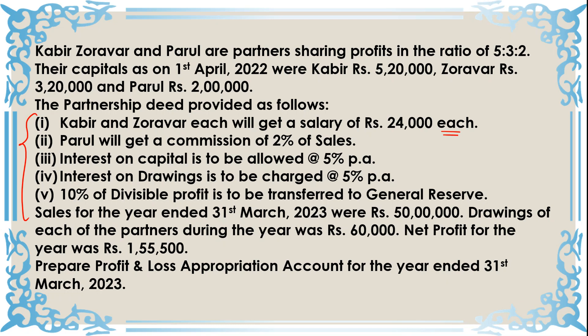Sales for the year ended 31st March 2023 were ₹50 lakhs, so Paru's commission is 2% of ₹50 lakhs. Drawings of each partner during the year were ₹60,000, so interest on drawings is charged at 5% per annum on ₹60,000 for each partner. Net profit for the year was ₹1,55,500.